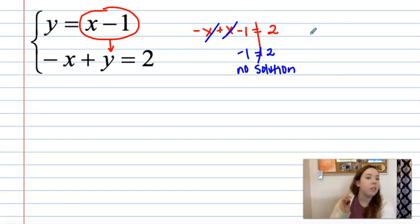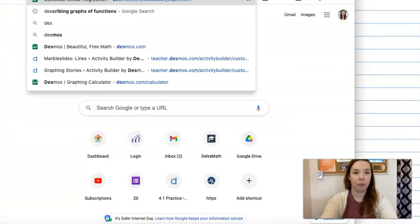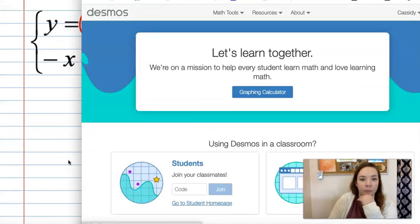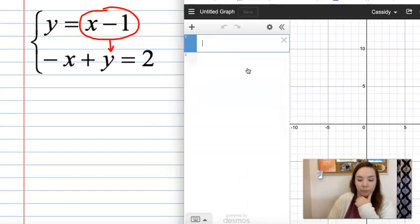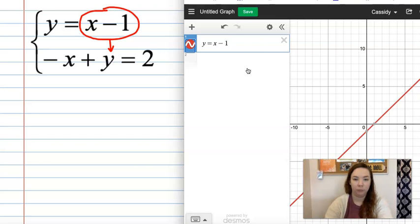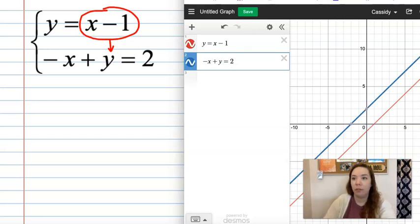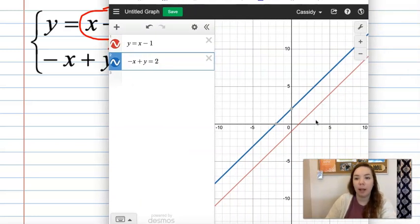Now you can also graph these either by hand or on Desmos. So let's go ahead and do that so you can see what that would look like. And again Desmos is also a great tool to check your answer as you go. But don't rely on it because you will have to show your work on your test this time. And now you can see in our Desmos these are parallel lines. So that also fits with our no solution. They're never going to cross.